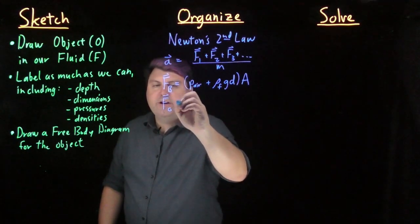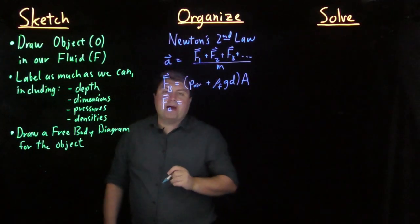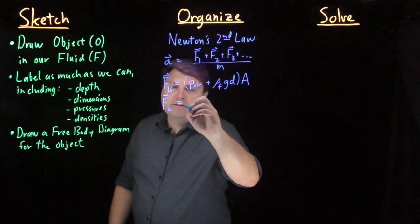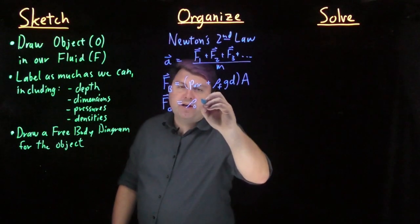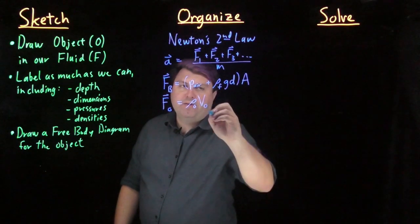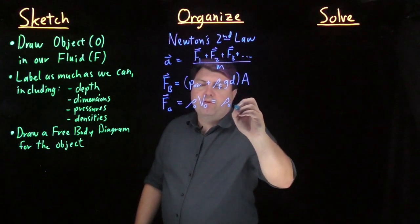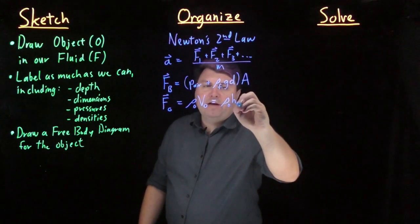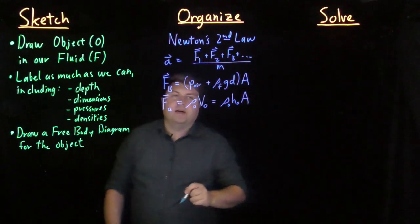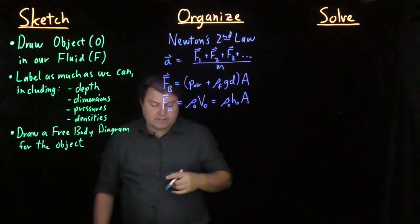Our force of gravity, we can write as mass times gravity, but now we can write this as the density of the object times the volume of the object, which we can then write as the density of the object times the area, in order to cancel things out a little bit easier.